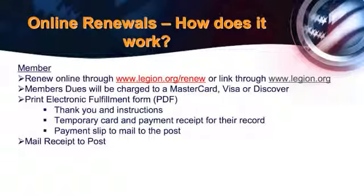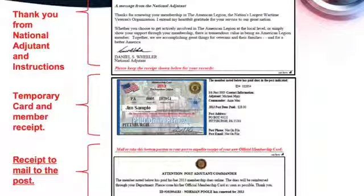How the online renewal works: the member goes to either MyLegion.org or Legion.org/renewal, pays their dues, submits it online with a credit card. They'll get a receipt, a temporary membership card, and a thank you letter. Two weeks later, we will get an updated list of those members and the check.